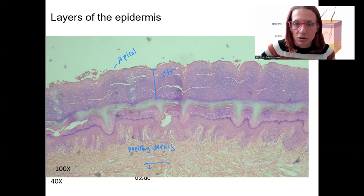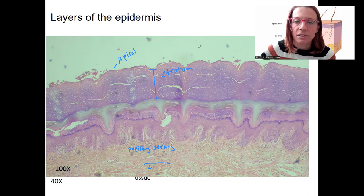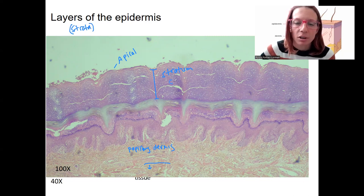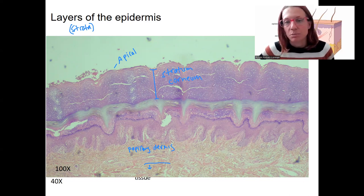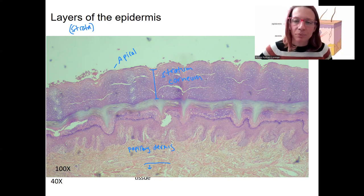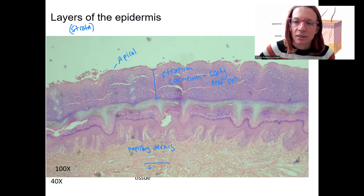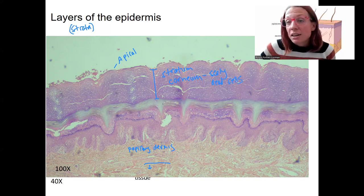Strata means layers — it's like stratification, the way geologists talk about stratification of the earth. Stratum is singular; these layers are called strata. Stratum corneum — I remember this because of the word cornea, corona meaning crown in Spanish. Corneum refers to the horny layer. These are dead cells that are kind of scaly — in some species like reptiles even more scaly — forming the top layer of the epidermis. Even though they're dead, they still play an important protective role.